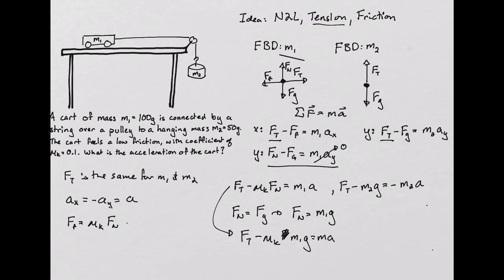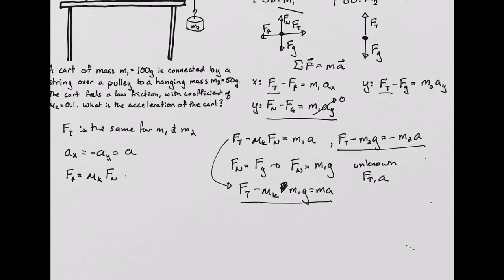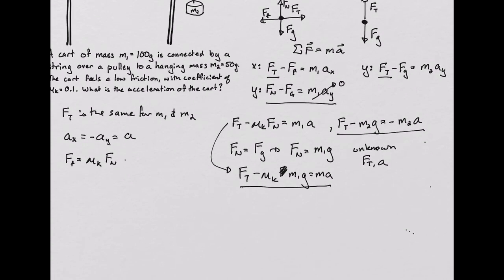I am now done with the physics of this problem. I have two expressions underlined there that have two unknowns. The force due to tension, and the acceleration of the objects. I can, at this point, use whatever mathematical tricks I would like in order to solve for the acceleration. What I am going to do is I am simply going to solve for the force of tension in one of them, plug it into the other one, and solve for acceleration.